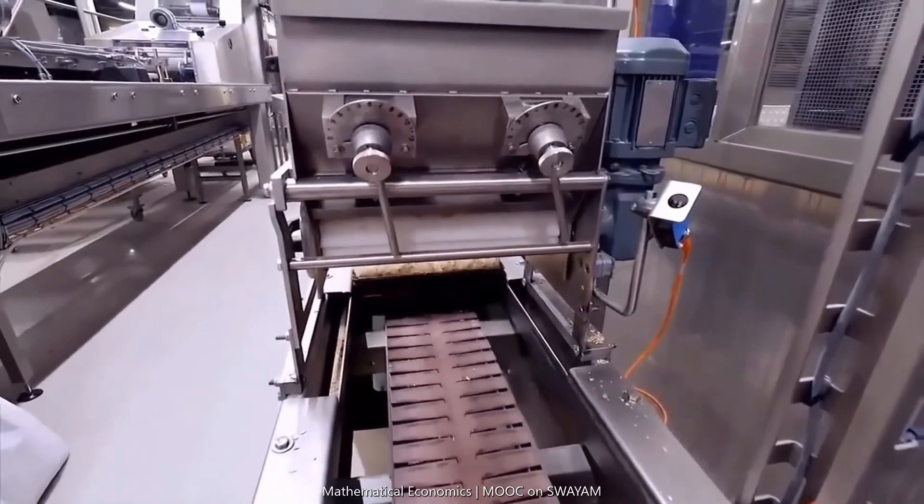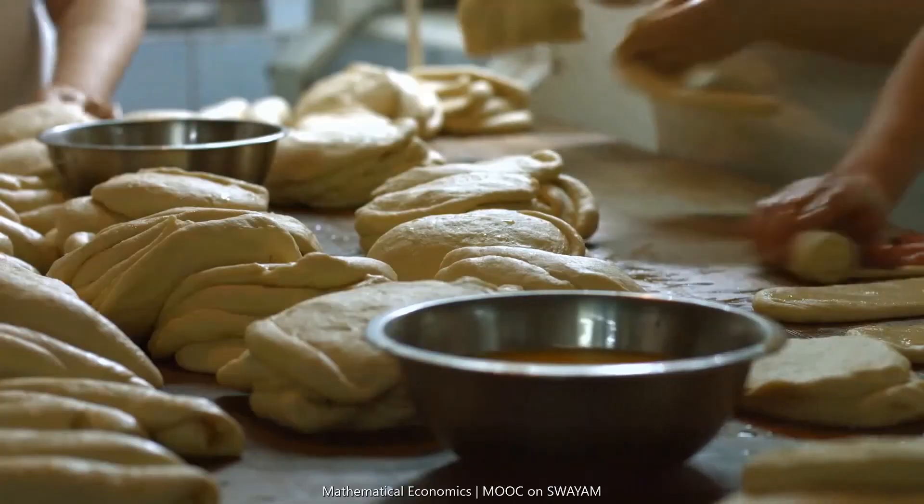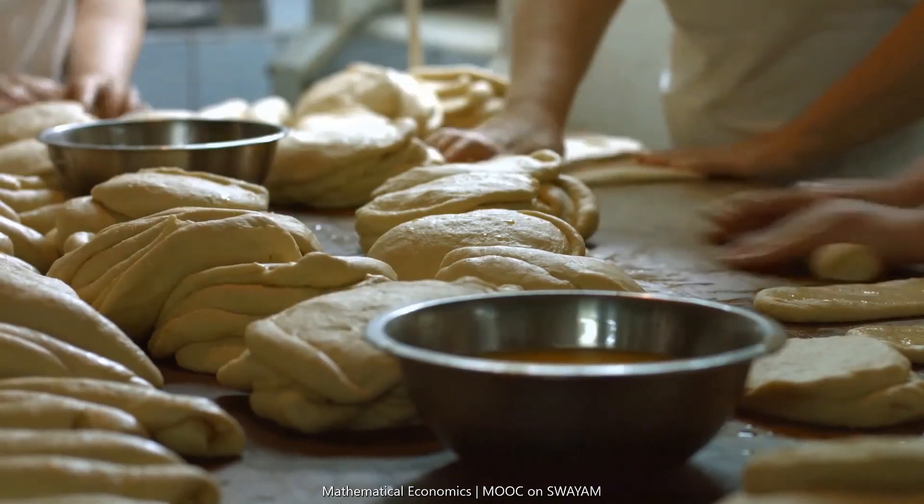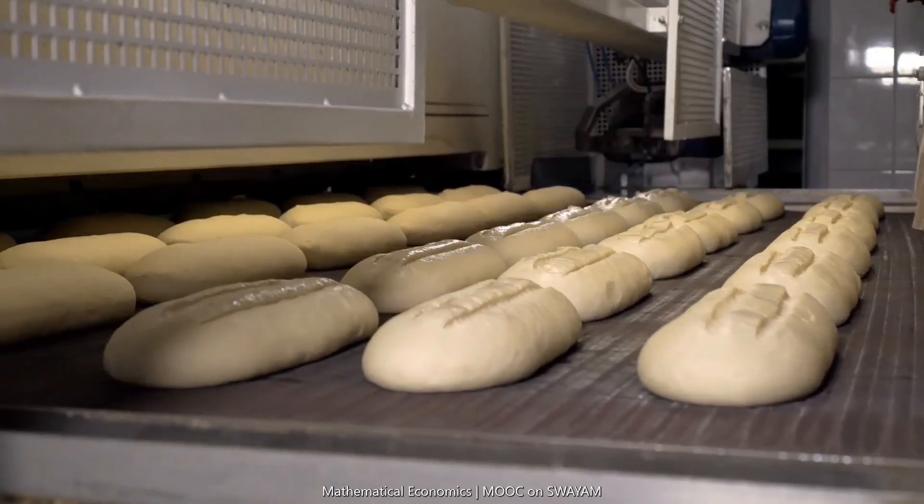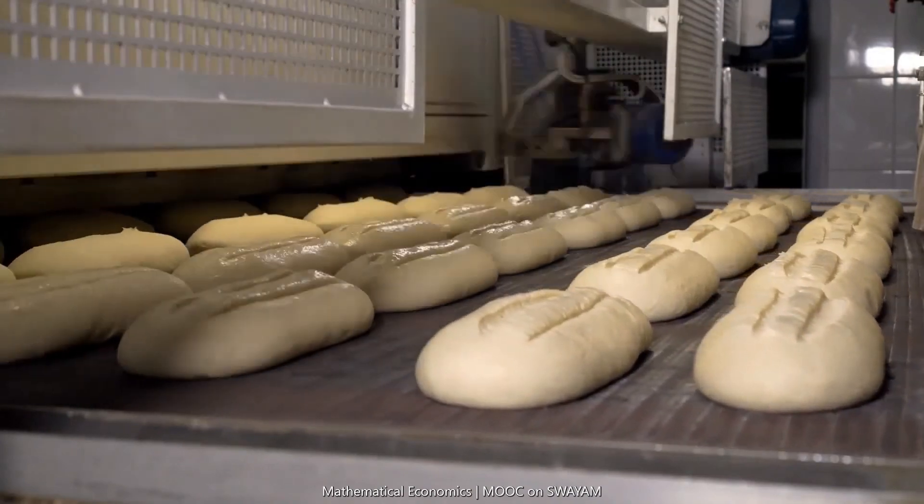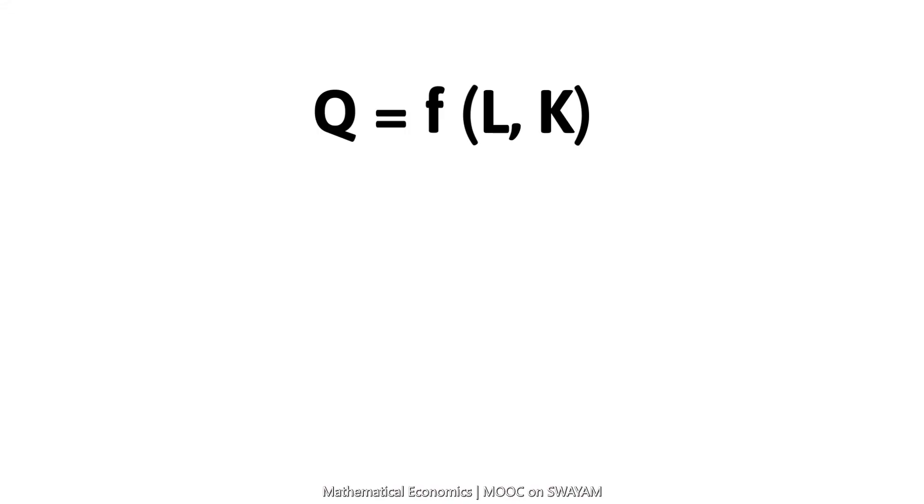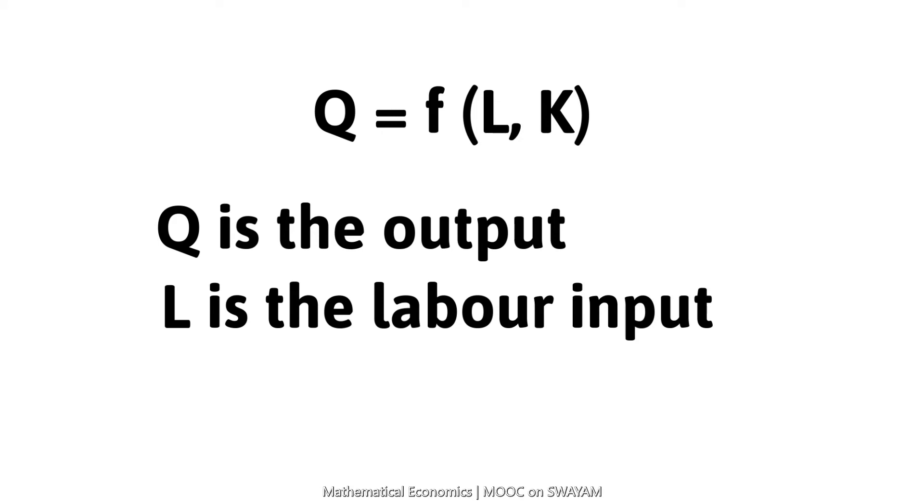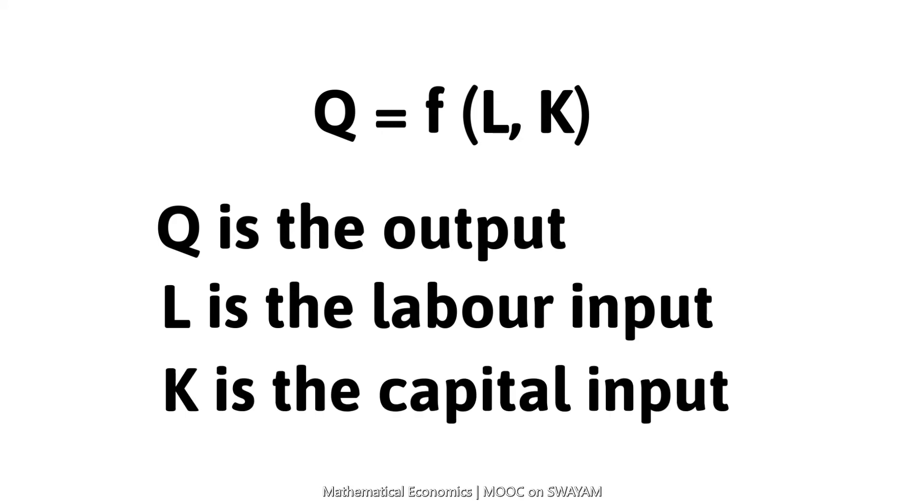Suppose there is a production process that uses two inputs, labor and capital. This situation may be expressed mathematically as q equals f, where q is the units of output to be produced, l is units of labor, and k is the units of capital. What is the independent effect of a change in labor and capital on the output?